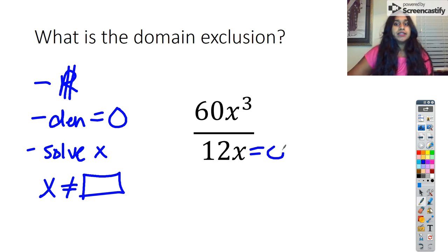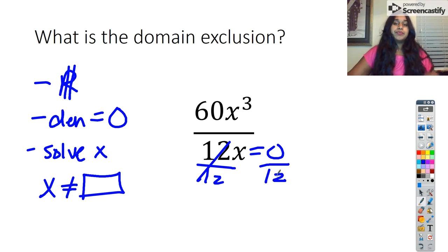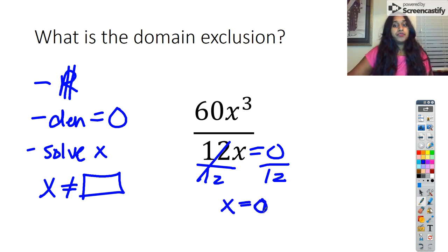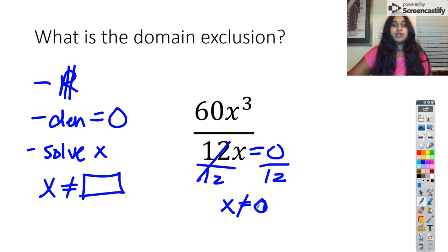So looking at this question, I simply set my denominator equal to zero. If I divide by 12, zero divided by anything is simply zero. But anything divided by zero is when we hit an undefined moment. So I've solved for X saying X equals zero. But if I plug zero in, that zero is the denominator. That means my domain exclusion is X cannot equal zero.